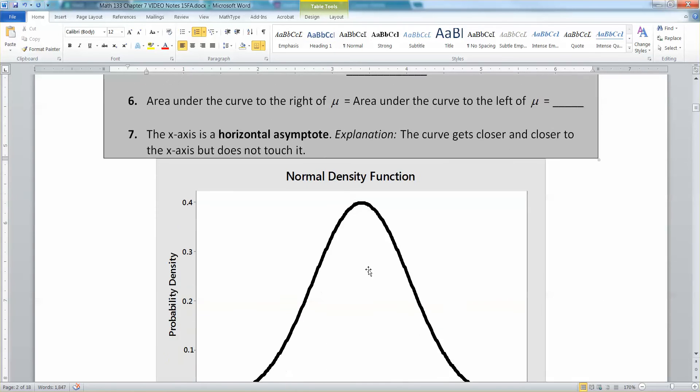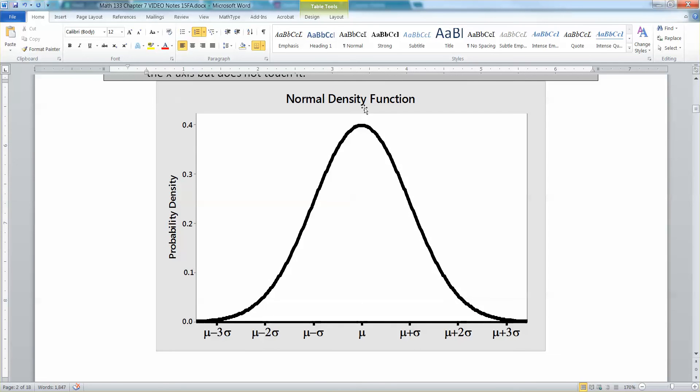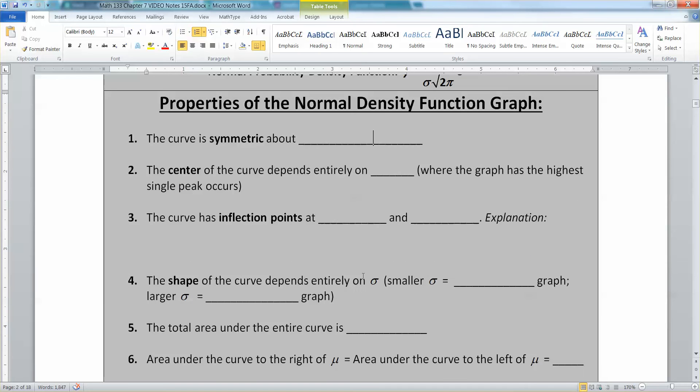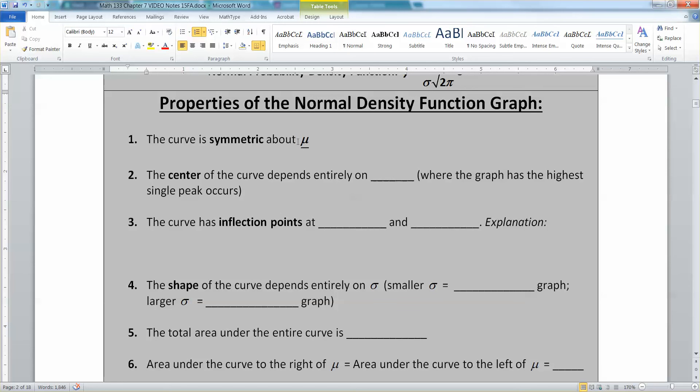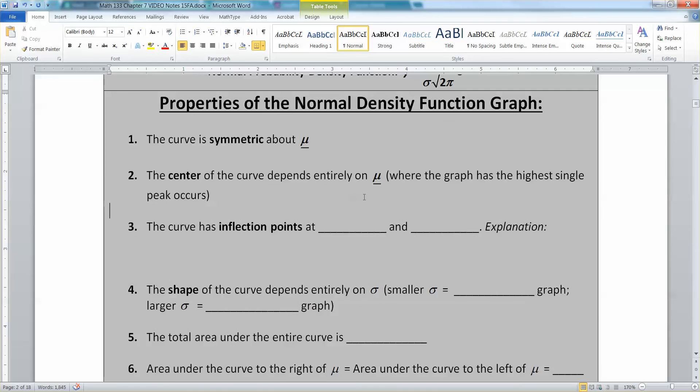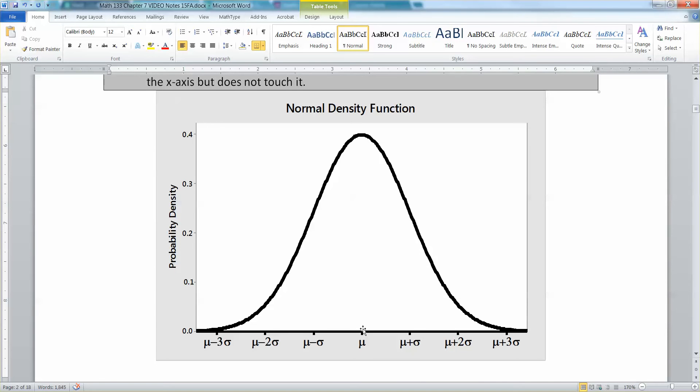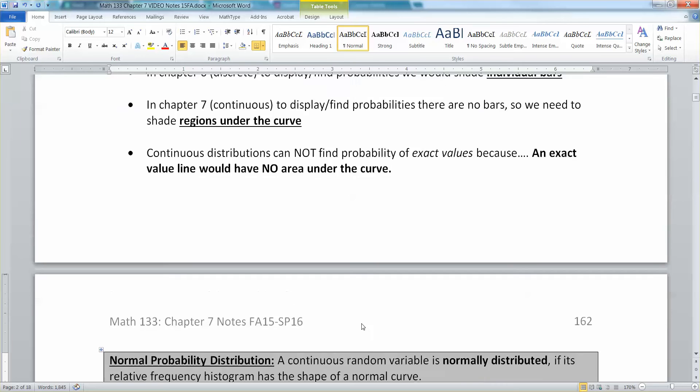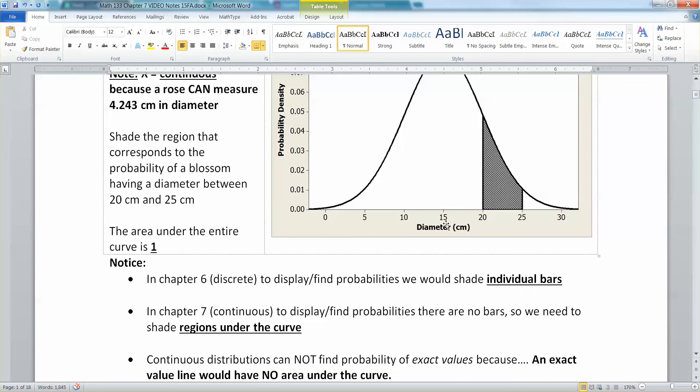Now, the normal curve, when you look at it, and I just put one up down here, it's symmetric around that line down the center. And the line down the center always happens at mu, your mean. So it's going to be symmetric around mu. There we have it. The center of the curve depends entirely on mu, where the curve would be the highest. So a normal curve is going to have its center on where the mu is. So it's going to be symmetric around mu. It's going to be dependent upon mu for where the center is. So right here in the middle. So whatever value that is, that's where your center is. So if you look back at this curve, 15 was my center because 15 was my mu there.